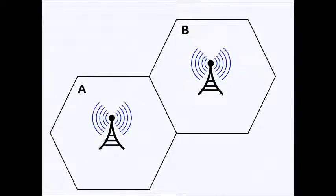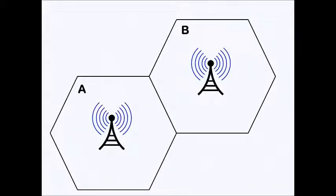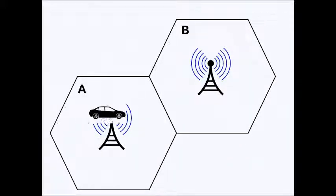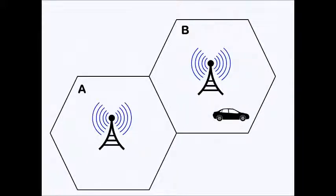For an explanation, consider two adjacent cells, cell A and cell B, each having its own antenna whose frequencies are different. Consider a vehicle in cell A which is connected to the base station antenna, meaning the mobile phone in cell A uses the frequency of cell A for communication. When the vehicle moves from cell A to cell B, the mobile phone has to switch from the frequency of cell A to the frequency of cell B. As soon as the vehicle enters cell B, it will start using the frequency of cell B. This process of switching frequency from cell A to cell B is called handoff, sometimes also called handover.